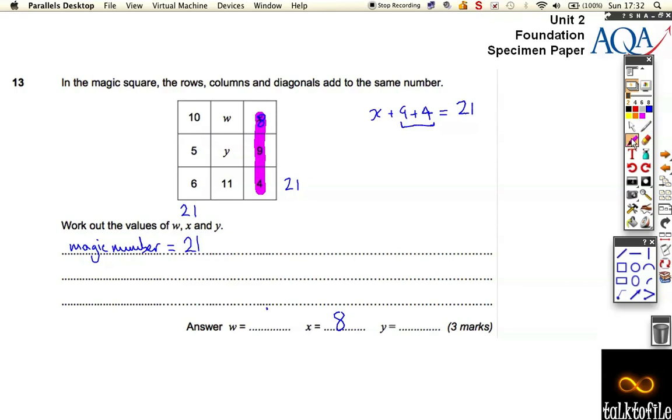Now, if I add up in a different direction, well, now I can spot, I can do a couple of different things. But if I went across here, I know that 5 plus y plus 9 has also got to equal 21. 9 and 5 add up to 14, so to get to 21, y must be 7. So actually, I could replace that with a 7.